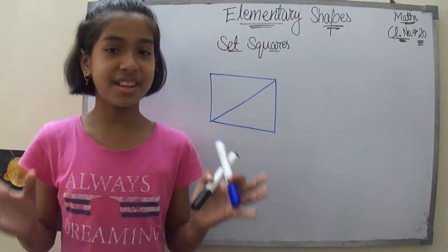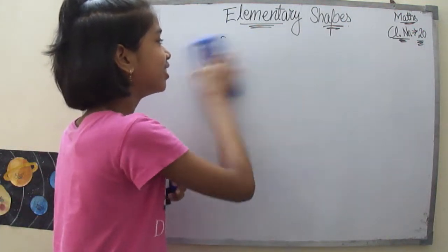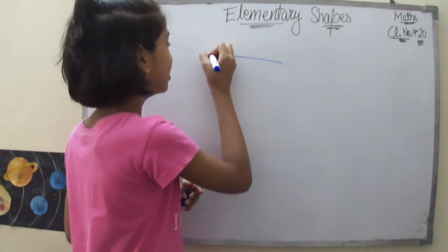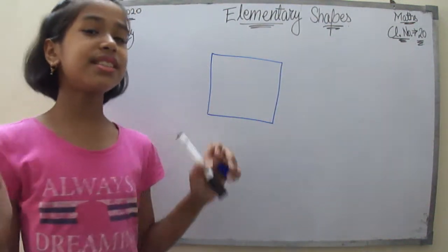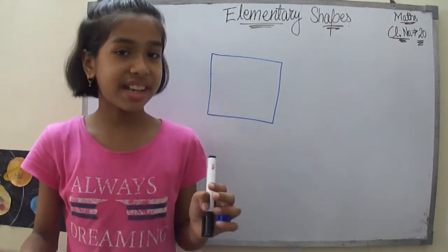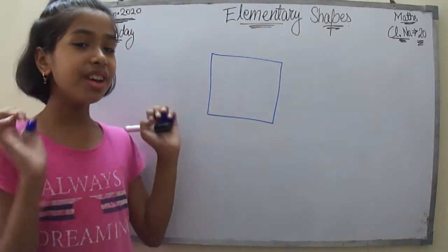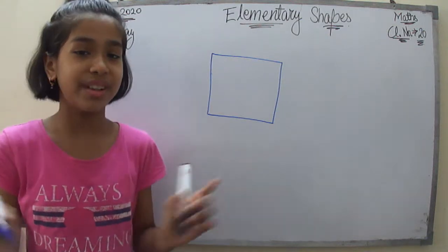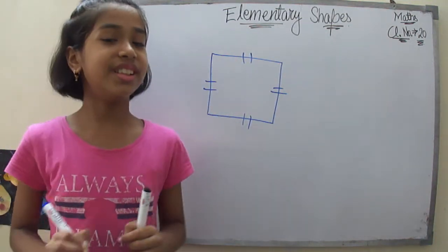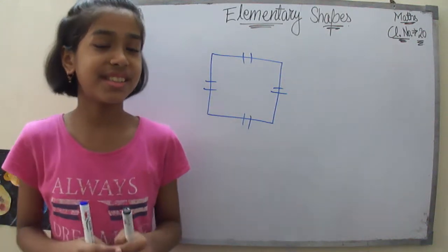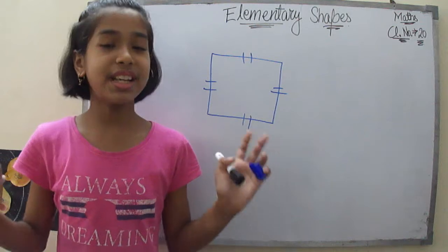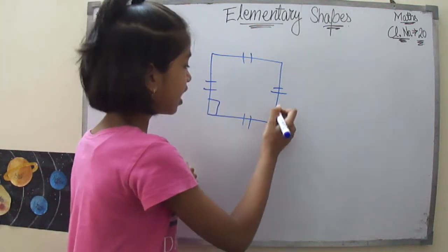Now let's talk about the quadrilaterals, starting with a very common one — the square. All the sides of the square are going to be equal. What about the angles? All the angles are equal to each other, or in simple words, equal to 90 degrees. All of these are 90-degree angles.